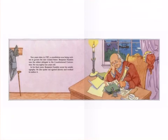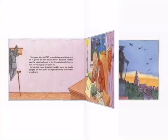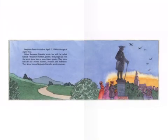In his final years, Benjamin Franklin wrote his autobiography. He also spoke out against slavery and worked to outlaw it. Benjamin Franklin died on April 17, 1790, at the age of 84. When he wrote his will, he called himself 'Benjamin Franklin, Printer.' But people all over the world knew him as more than a printer — they knew him as a writer, scientist, inventor, and statesman. They knew him as Benjamin Franklin, great American.